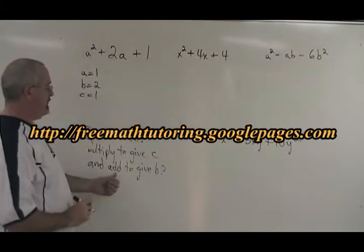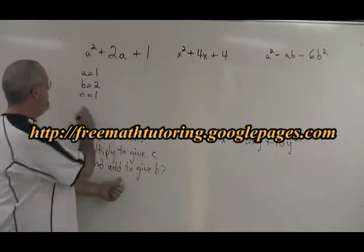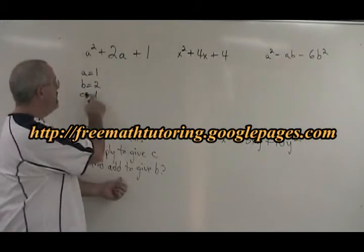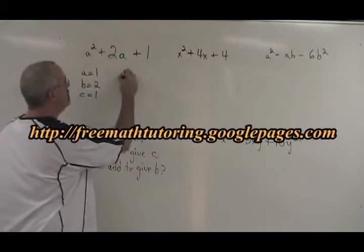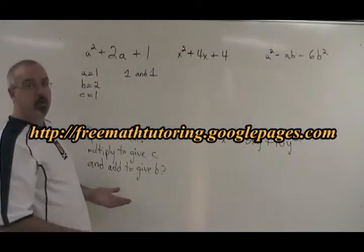Then we ask ourselves this question: What two numbers multiply to give c and add to give b? So in this case, what two numbers multiply to give 1 and add to give 2? The answer is 1 and 1. They add to give 2, they multiply to give 1.